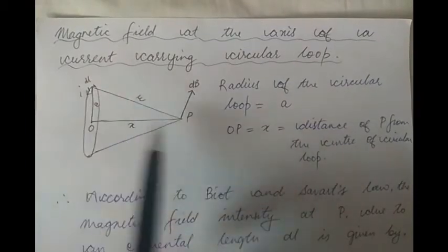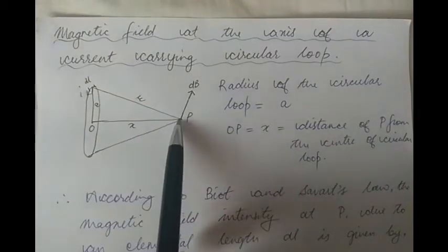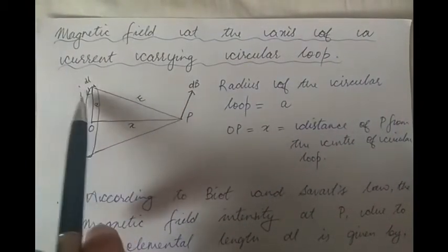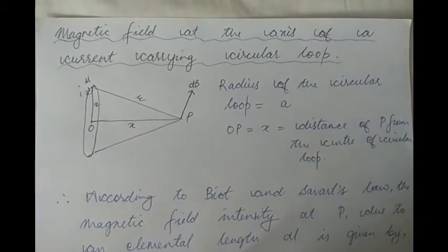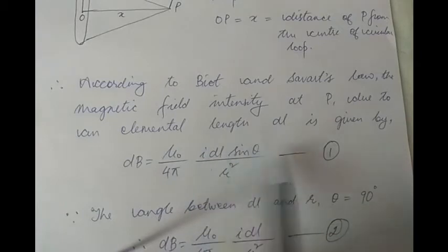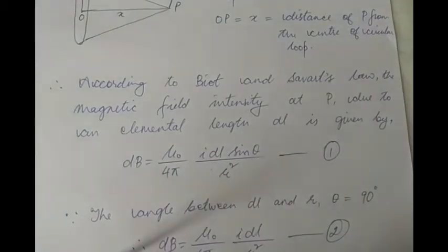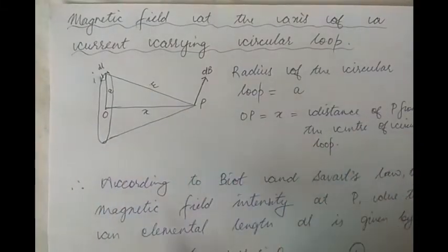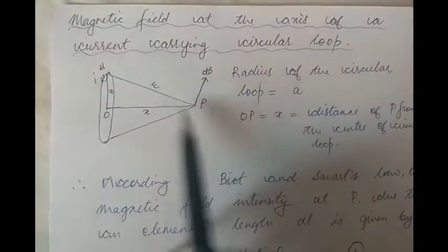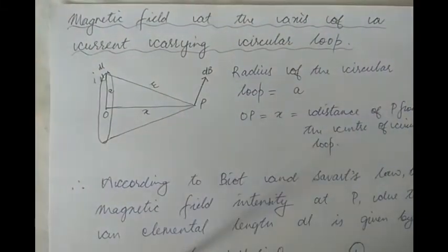The magnetic field intensity at point P, due to current I flowing through DL, is given by Biot-Savart's law: dB = μ₀/4π · I DL sinθ / R², where θ is the angle between DL and R.